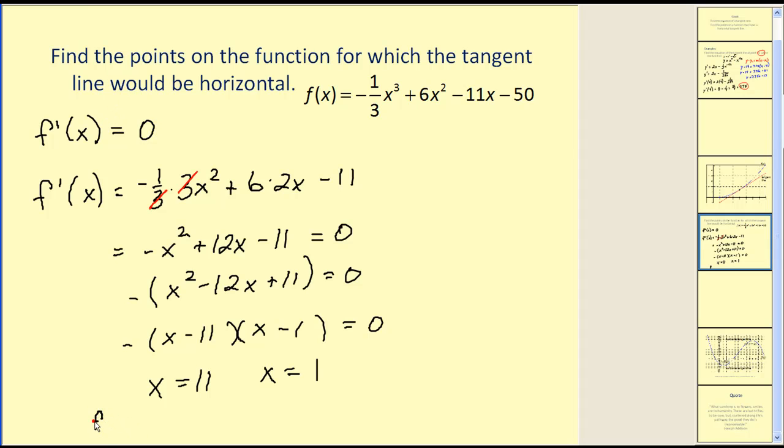But they ask for the points, so we also have to find the y coordinates. So we need to find f of 11. That would give us the y coordinate when x is 11 and f of 1. Remember we're going to sub these values back into the original function here, not the derivative. To save time, I've already done that. F of 11 is equal to 111.3 repeating. F of 1 is equal to negative 55.3 repeating.